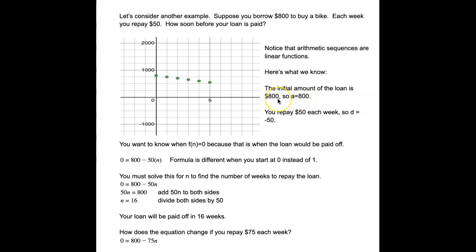We know that the amount of the loan is $800, so a = 800. We know that you are repaying $50 every week, so d = -50. And what you want to know is what week will it be when this function goes all the way to zero.